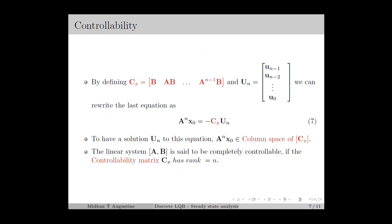Now, to have a solution u_N to this equation, A^N times x0 should be in the column space of the matrix Cx. If the column space of Cx is the entire space R^n, then for any initial state x0, A^N times x0 will be in the column space of Cx. This means we can find a control input sequence which transfers x0 to the origin in a finite number of time instances. We have the column space of Cx equal to R^n if the rank of Cx equals n. Therefore, the linear system (A, B) is said to be completely controllable if the controllability matrix Cx has rank n.